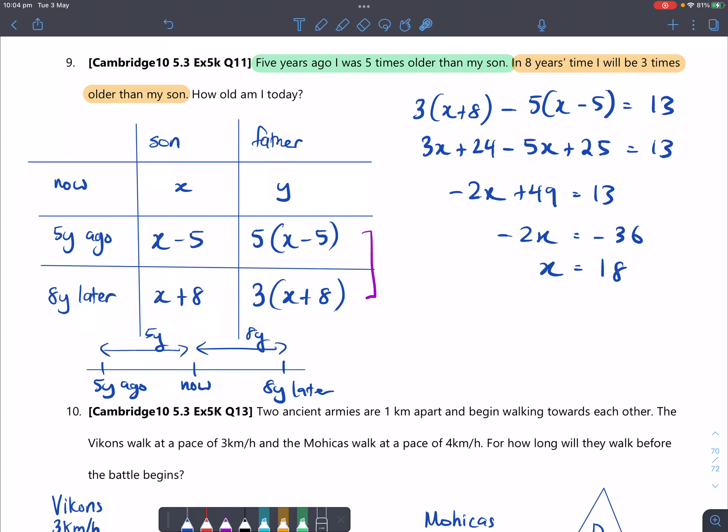And then dividing both sides by negative 2 will give you 18. So that is the son's age, which is 18 years old. But the father is y years old, so you need to find what's y.